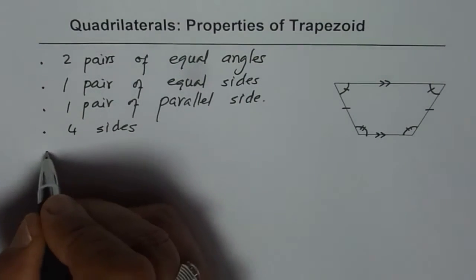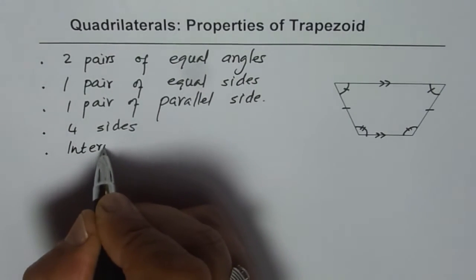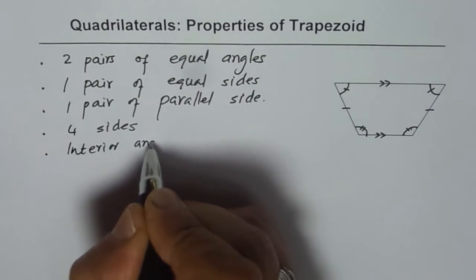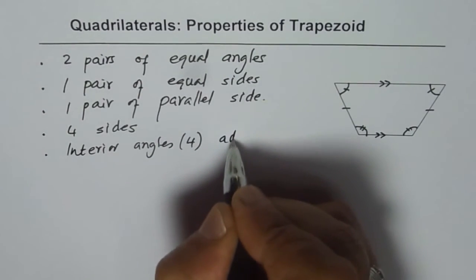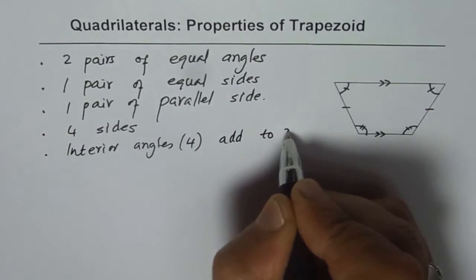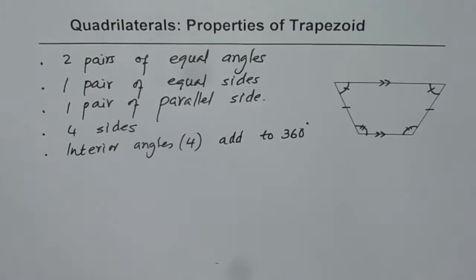And interior angles, which are four, add to how much? Add to 360 degrees. That is for each and every quadrilateral.